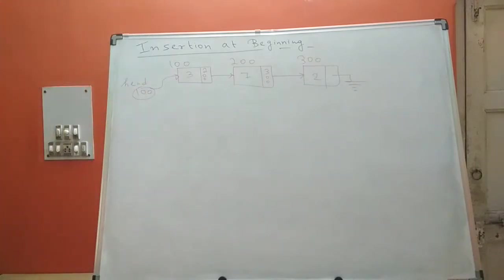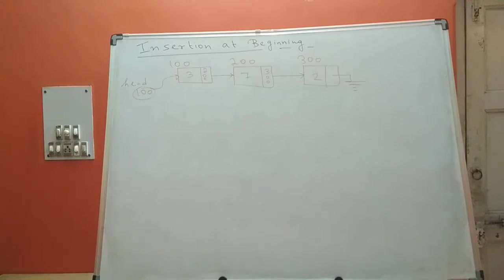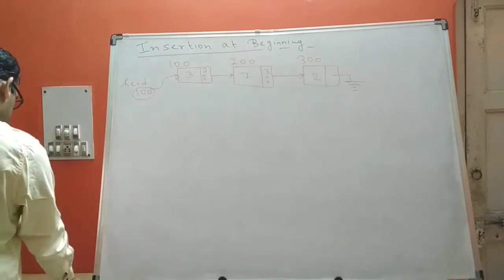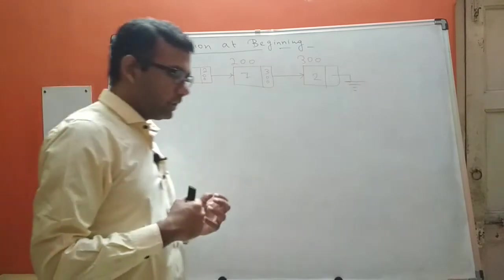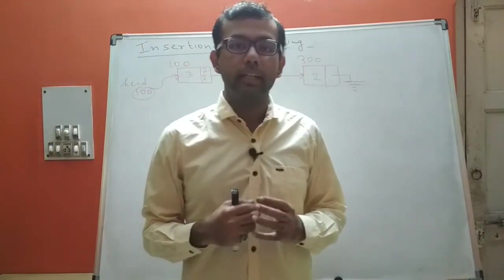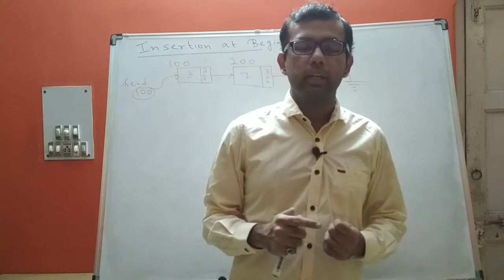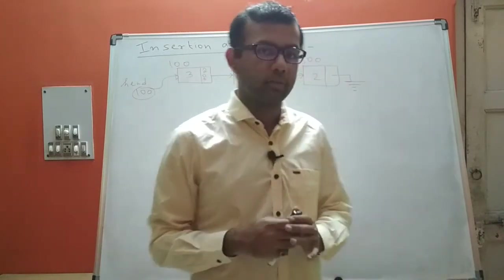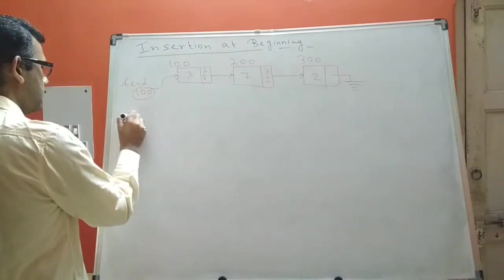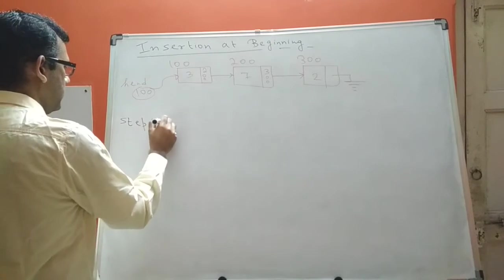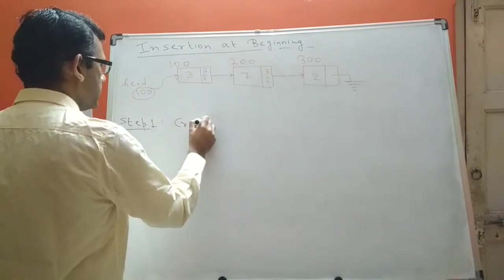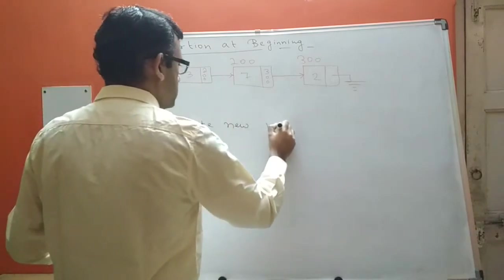Now the question is: I want to insert a new node at the beginning of the list — that is, before the node containing 3. To insert a node at the beginning, the first thing I need to do is create that node. If you have seen my previous videos, you know we can create a node using the malloc memory management function. So step one is to create a new node.